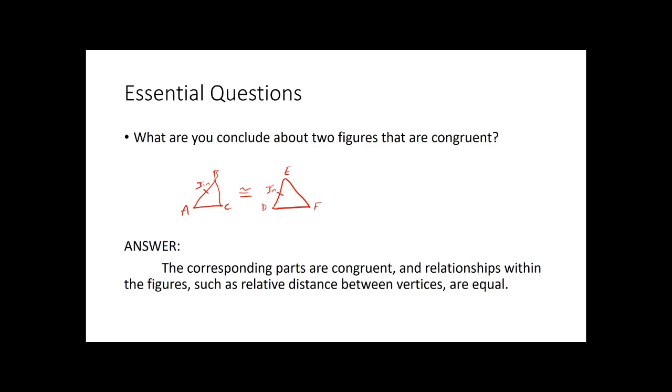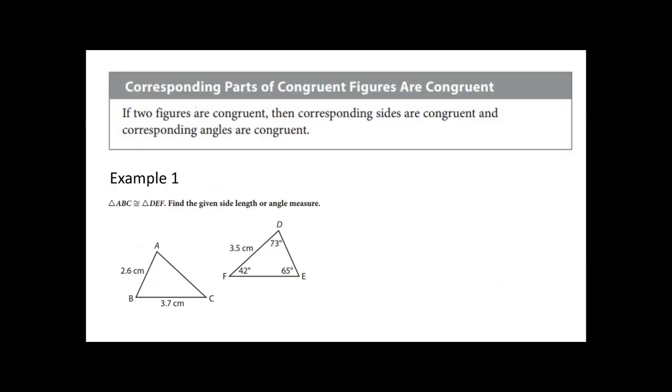That means AB is going to be the same length as DE. Even their angles will be the same. So if angle BAC was 60 degrees, well then EDF would also be 60 degrees. That is what we call Corresponding Parts of Congruency. So we'll get to that.